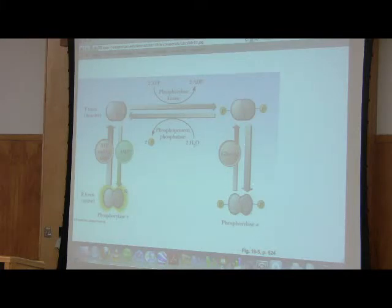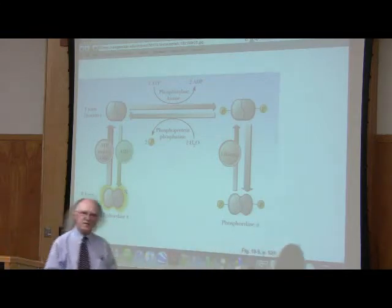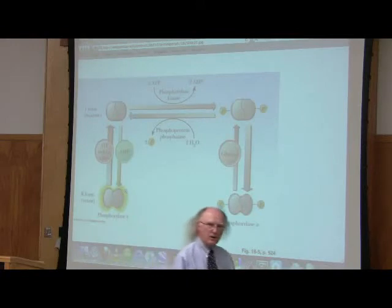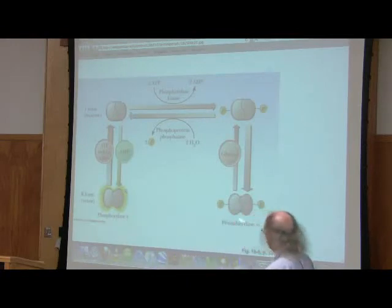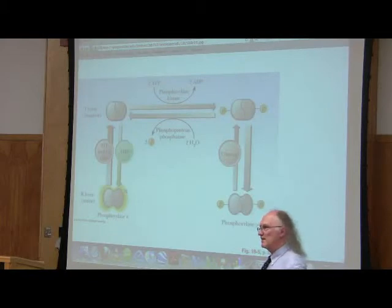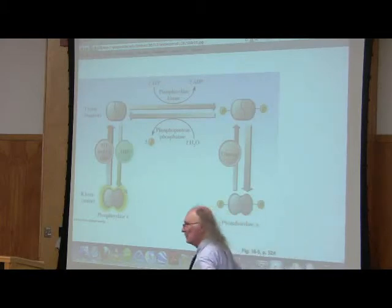Well, what flips it into the R state? Nothing. If there's no glucose, it will automatically flip into the R state. That means that glycogen phosphorylase A on average is going to be found in the R state. And it's for that reason we think of glycogen phosphorylase A as being the more active form of the enzyme.